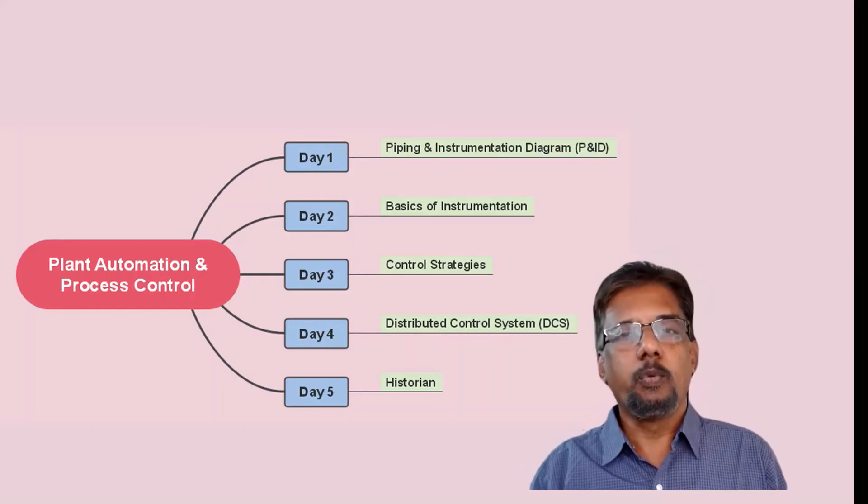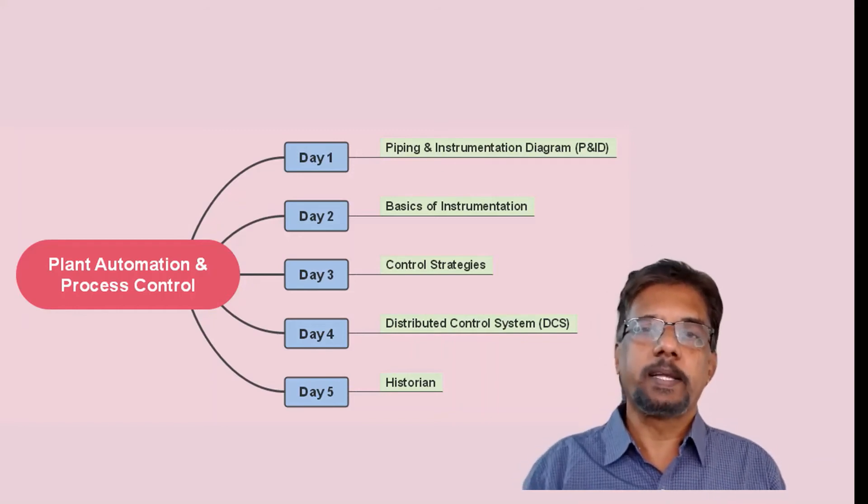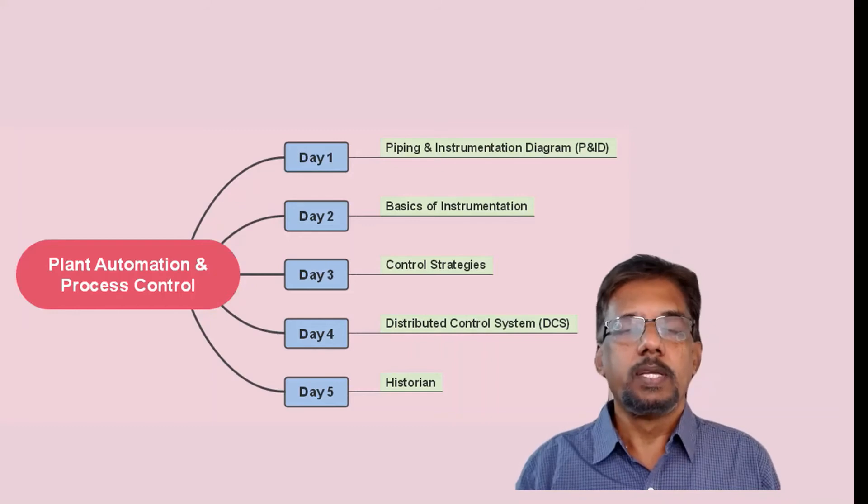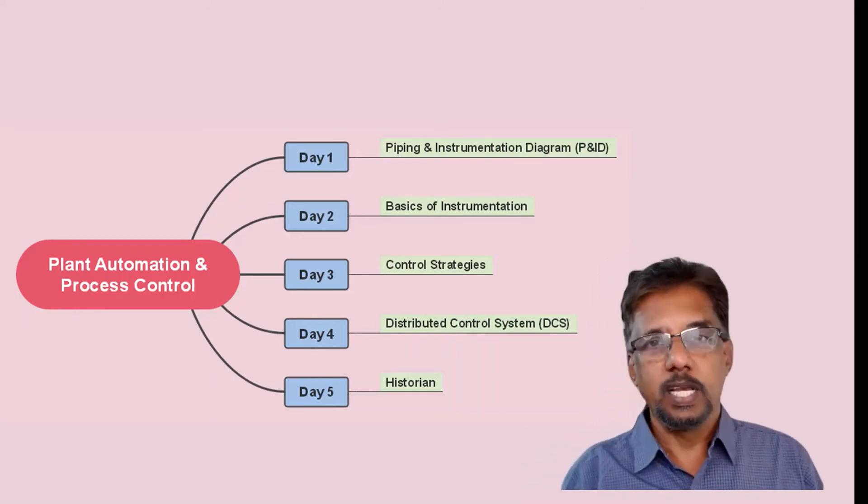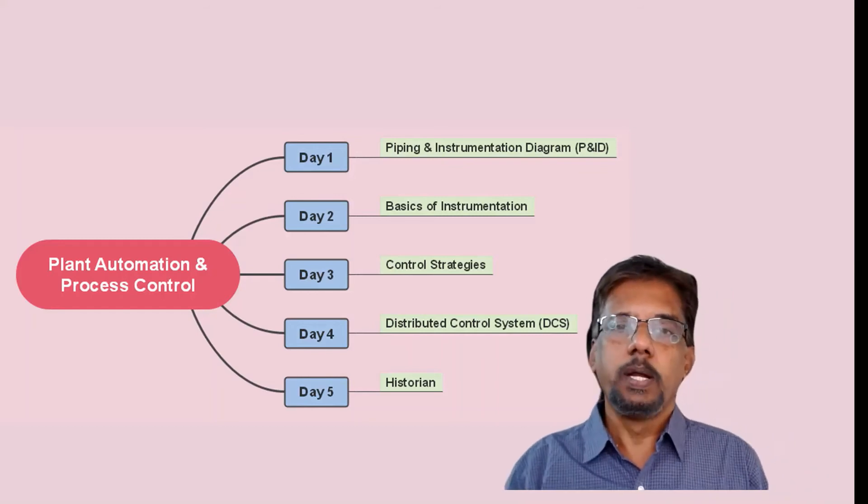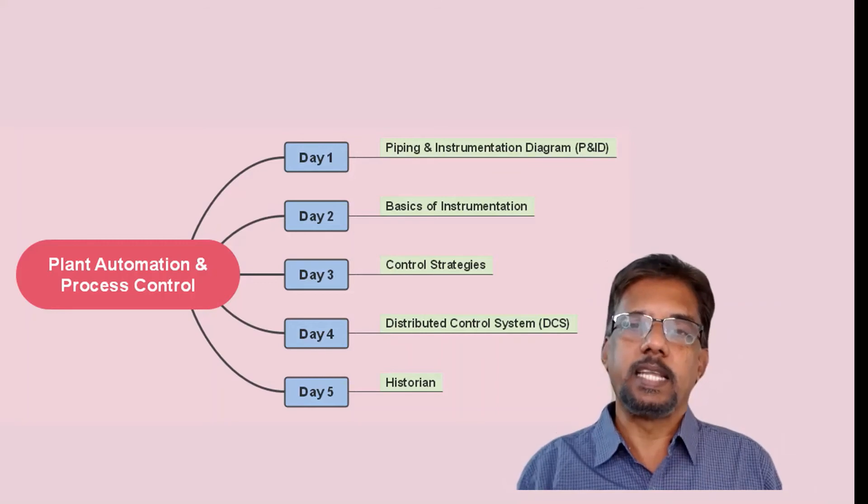And again on fourth day we are going to discuss about the different aspects of a DCS system which is known as distributed control system. Various features like graphics page, alarm page, control group, tuning panel, alarm summary, etc. would be discussed in length.